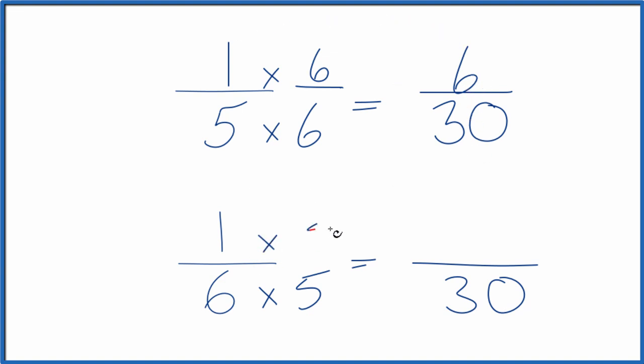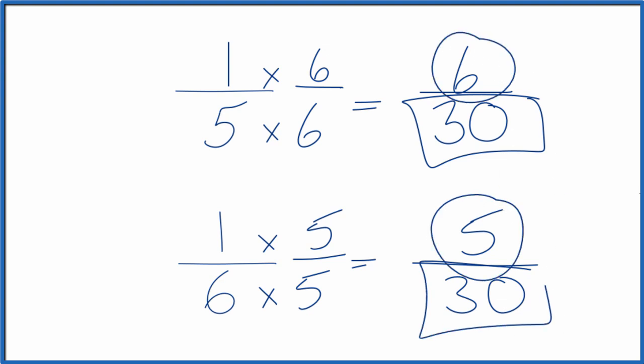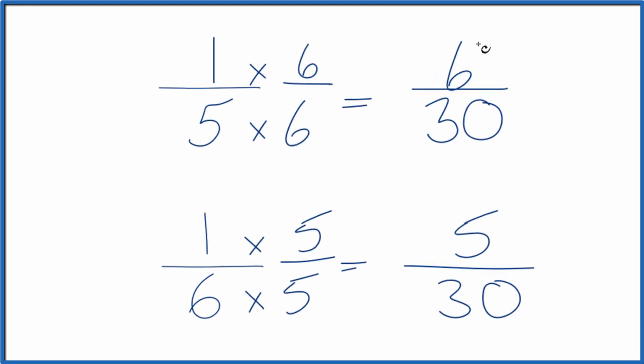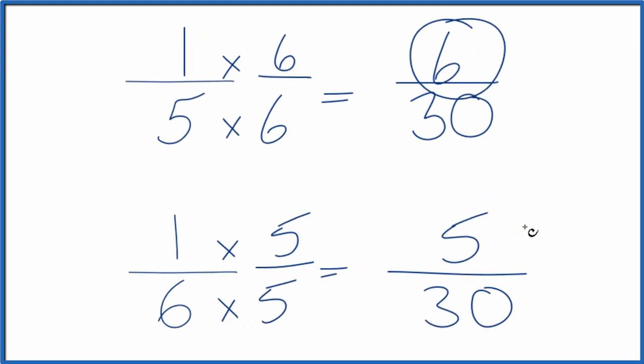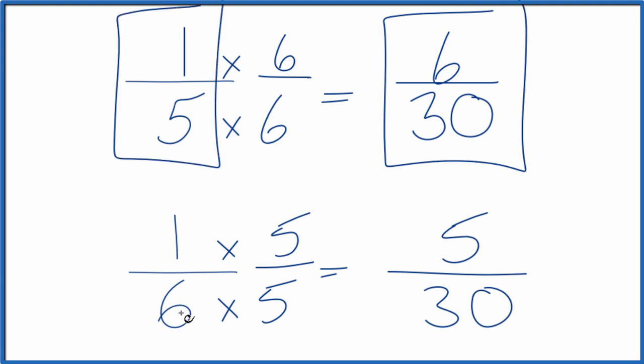Down here, we're going to multiply both the numerator and denominator by 5. 1 times 5 is 5. Now we have the same denominator. We can just compare the numerators, figure out which fraction is larger. 1-5 or 1-6? Since 6 is larger than 5, that means 6 thirtieths. That's larger than 5 thirtieths. And 1-5 is larger than 1-6.